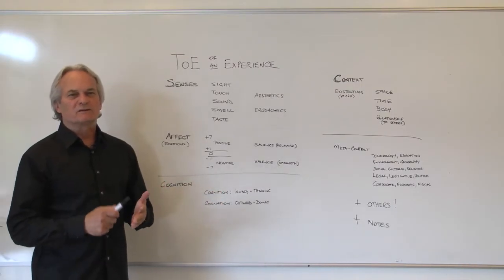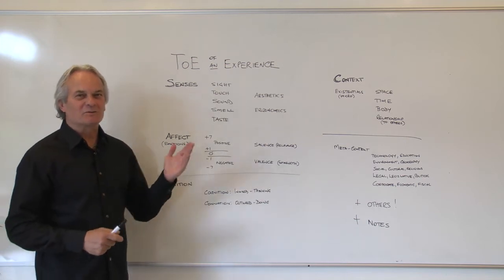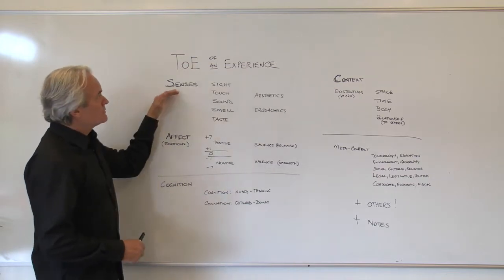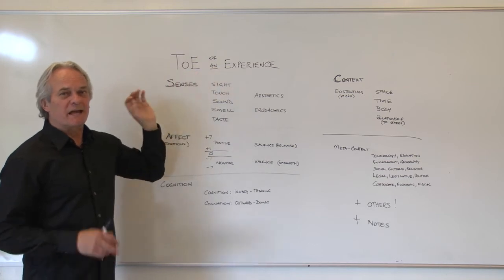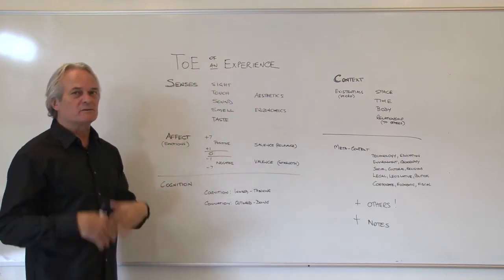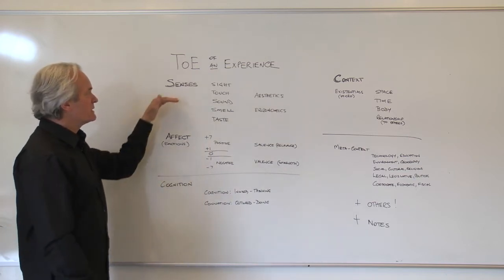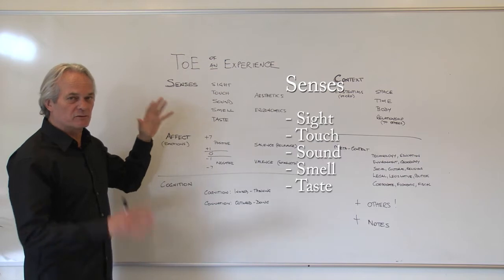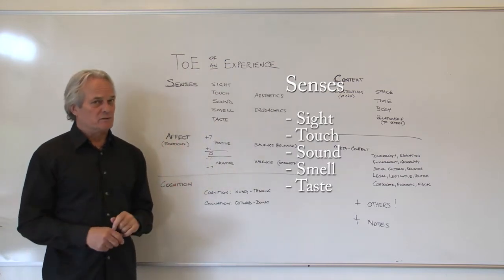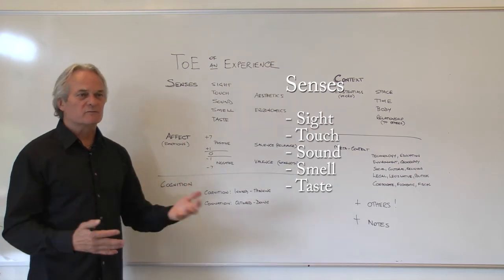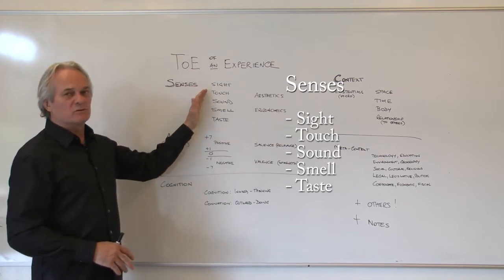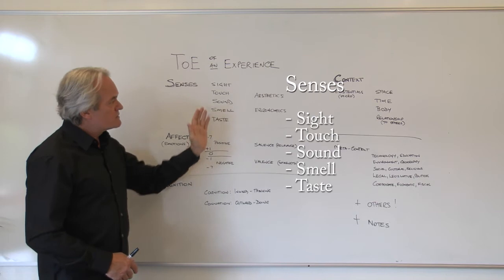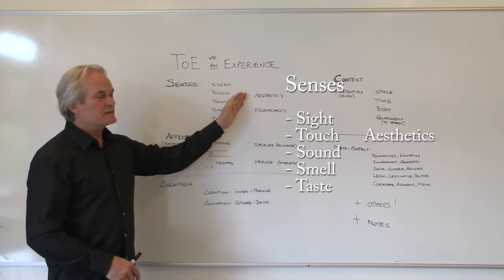So let's go to the whiteboard and go through each of these points in a little more detail. We start with the taxonomy of an experience — trying to understand a particular experiential event, its deeper layers. It will always have senses: sight, sound, touch, smell and taste. We all have them in different degrees and appreciate them in different ways. We can also overlay another layer on top of those — the quality layers of aesthetics and ergonomics.